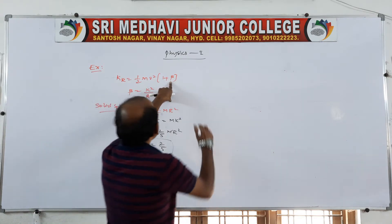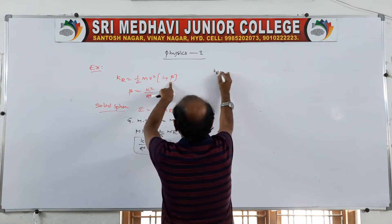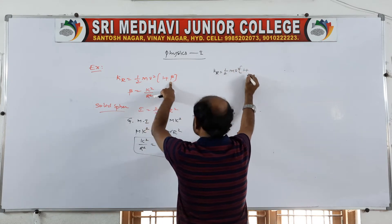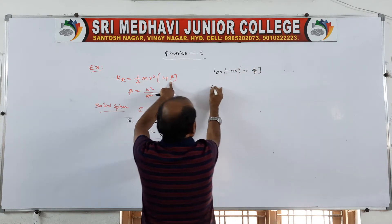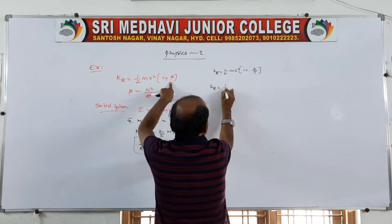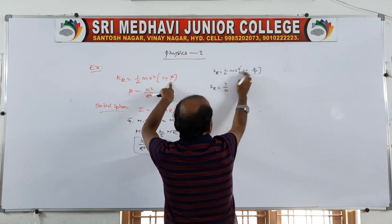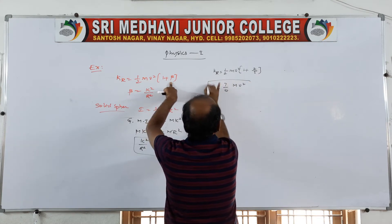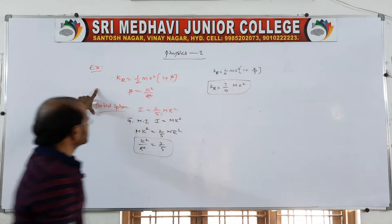Whatever number is represented, that is k squared by r squared, which equals 2/5. Now replacing: K_rolling equals 1/2 mv squared of 1 plus 2/5. So K_rolling equals 7/10 mv squared for a solid sphere.